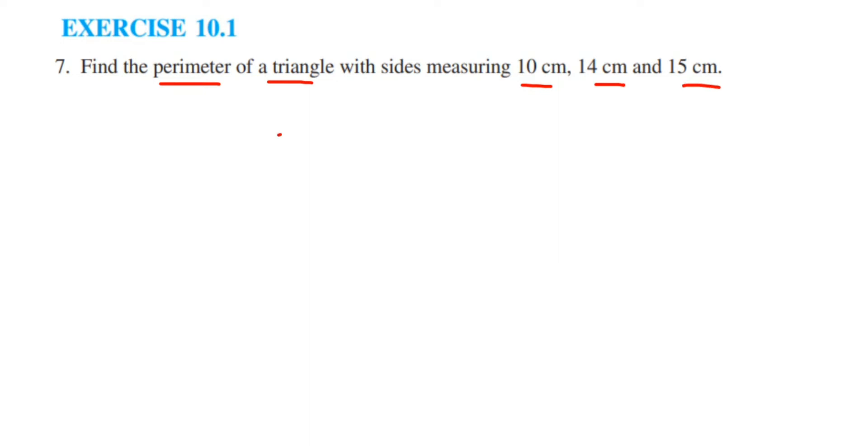We have three sides. We have to find out the perimeter. Perimeter means the boundary - we have to find out the length of the boundary of this triangle. So we have to just add all the three sides, and then we're going to get it.